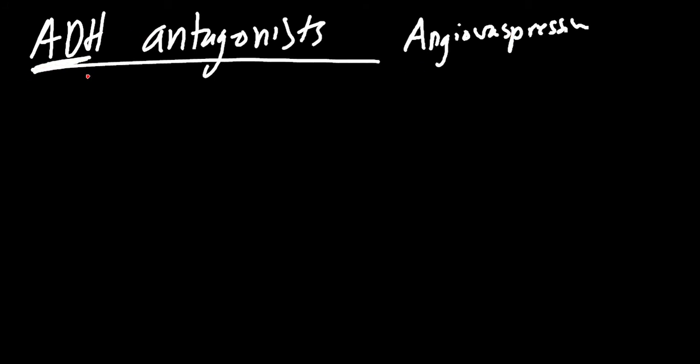ADH is a drug that has a lot of effects, and one of the effects is on the kidney. We're going to talk about drugs that are ADH receptor antagonists - they're going to antagonize and block the receptor for ADH.